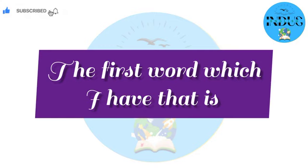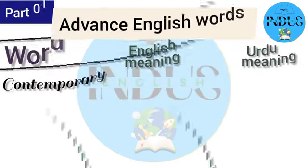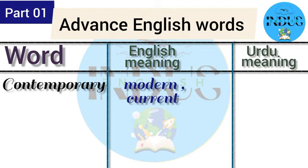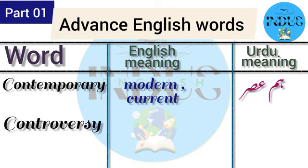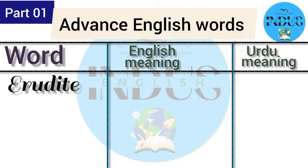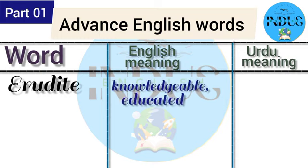The first word is 'contemporary.' Contemporary means, in English, modern or current. In Urdu, it means hum asar. 'Controversy' means argument or debate in English, and in Urdu it's tanazi'ah. 'Erudite' means knowledgeable or educated. In Urdu, it means ilmi fazilat.